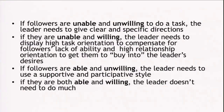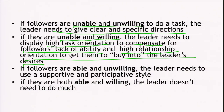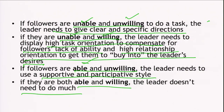If followers are unable and unwilling to do a task, the leader needs to give clear and specific directions. If followers are unable but willing, the leader needs to display high task orientation to compensate for their lack of ability, and high relationship orientation to get them to buy into the leader's desires. If followers are able but unwilling, the leader needs to use a supportive and participative style. If they are both able and willing, the leader does not need to do much.